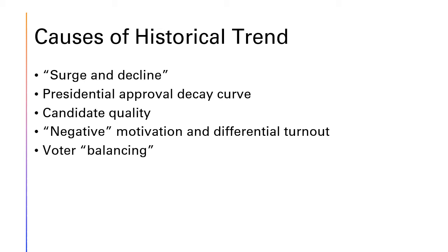Finally, there's a small but significant fraction of the electorate that tends to engage in what's called balancing in their voting behavior. These are voters who prefer to see divided government — with Democrats in charge of one branch and Republicans in charge of the other — as a way of trying to keep either party from implementing too radical of an agenda.